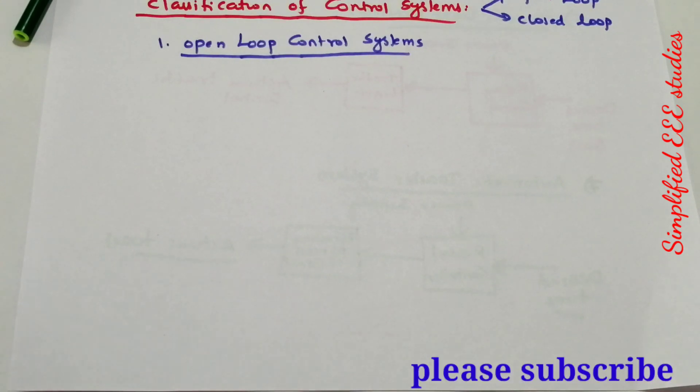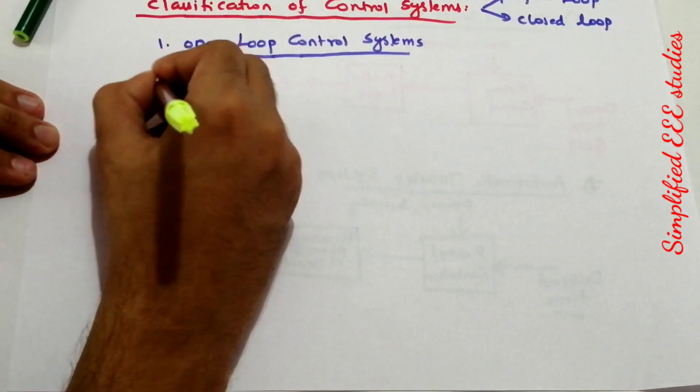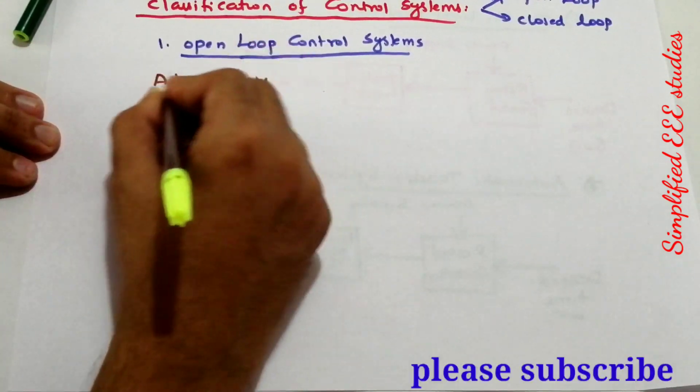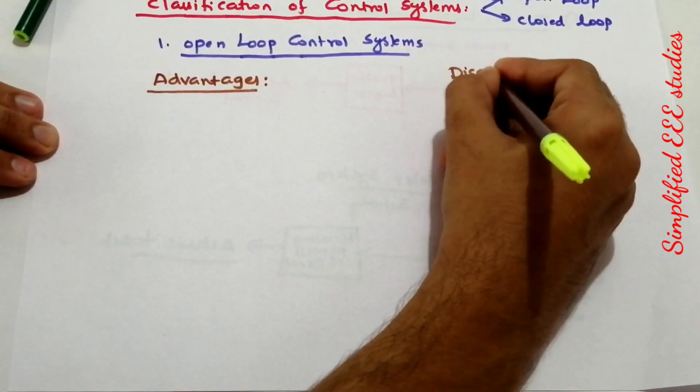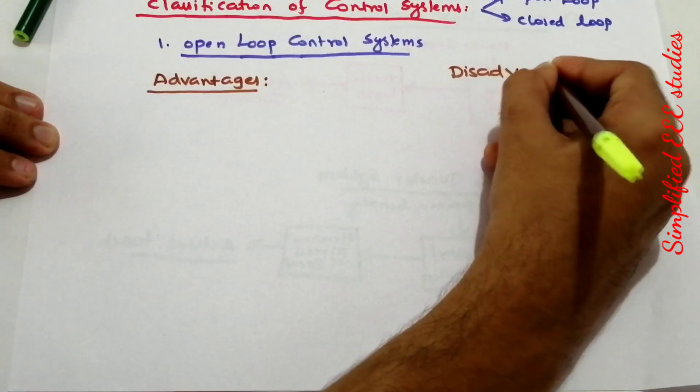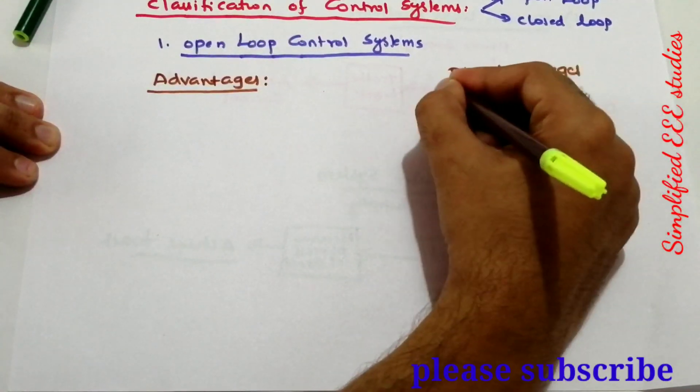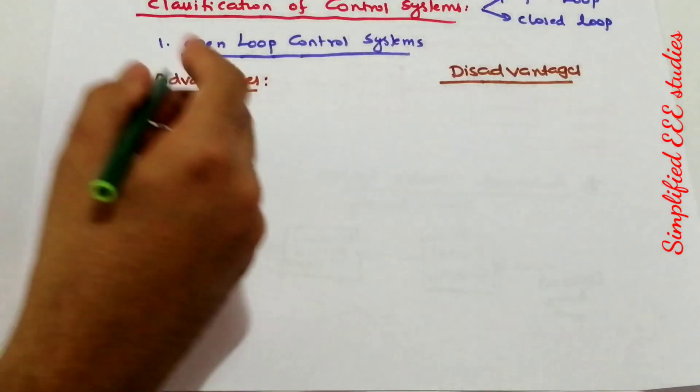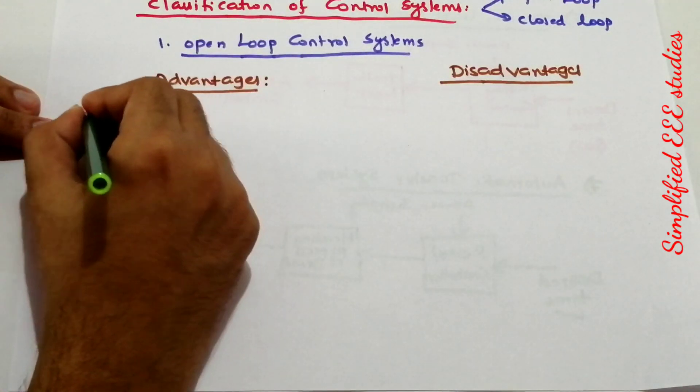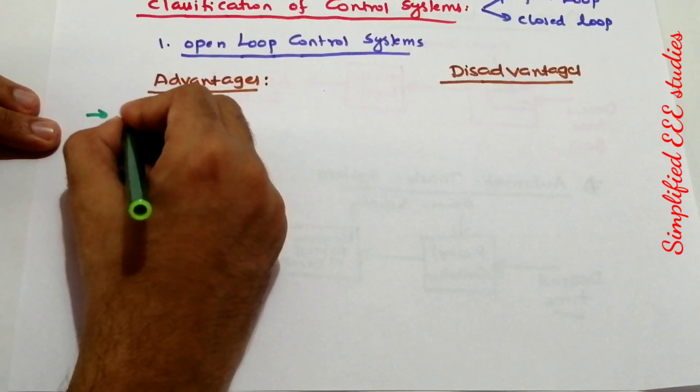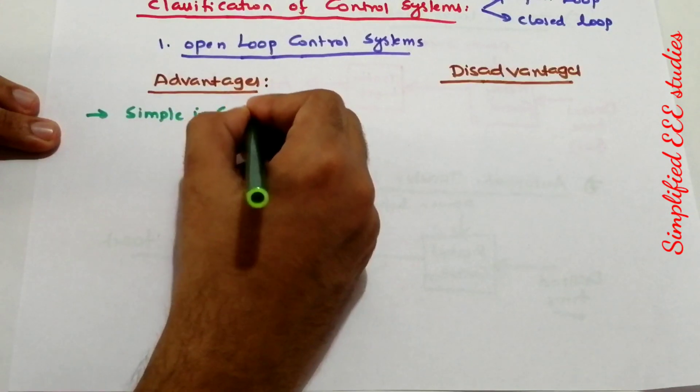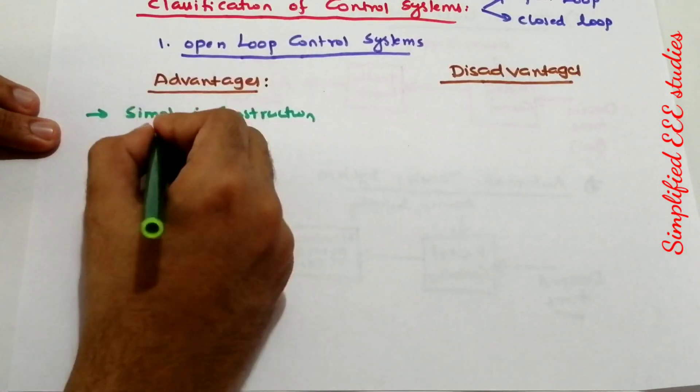Today I will discuss the advantages and disadvantages of open loop control systems. Let's have a brief discussion on the pros and cons. The first advantage is that it is very simple—there is no complicated design. It is simple in construction and design.